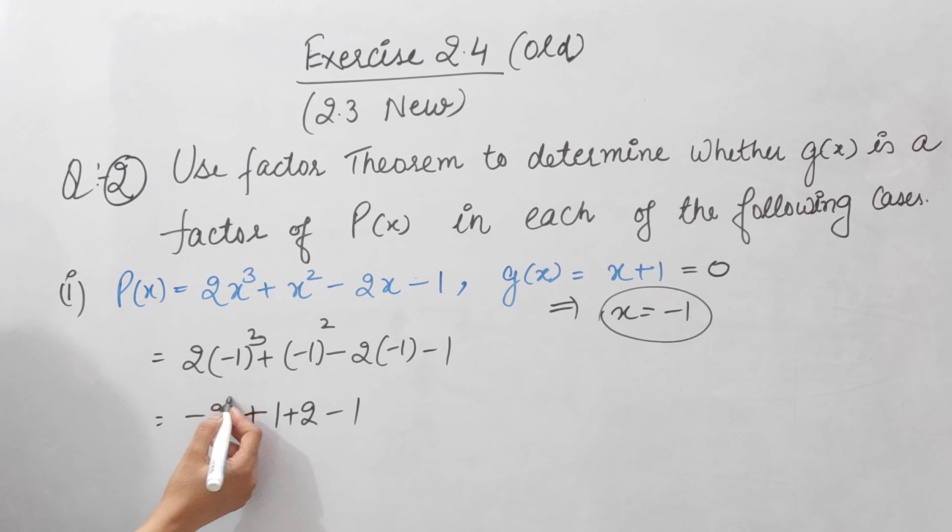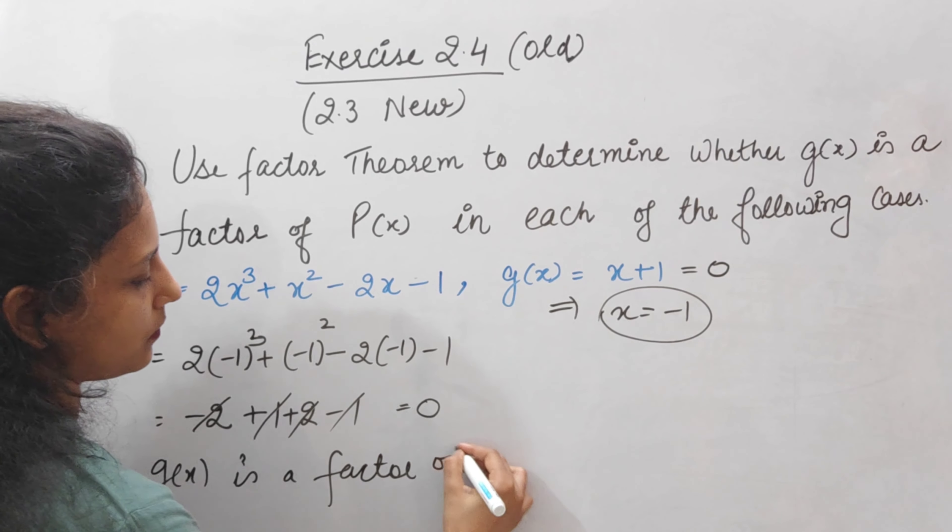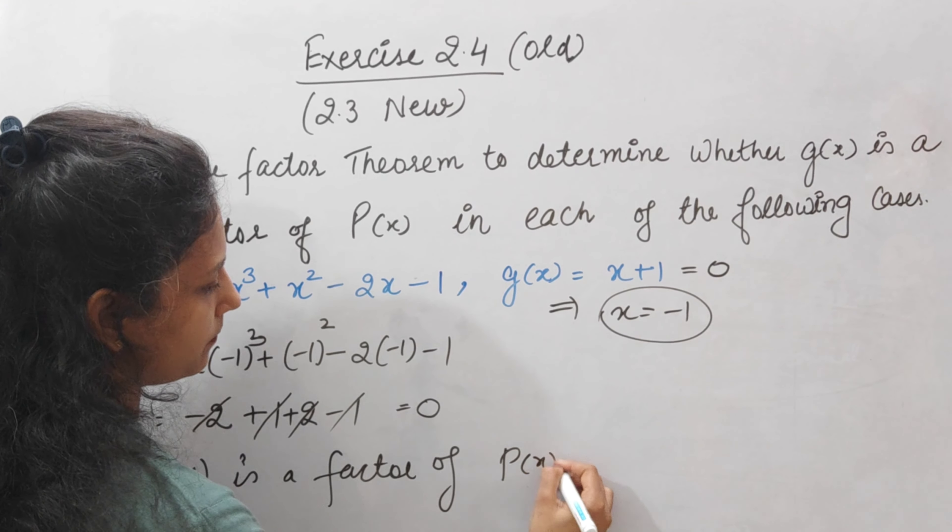So minus 2 and plus 2 cancel out, and plus 1 and minus 1 cancel out. So the answer is 0. It means g(x), which is x plus 1, will be a factor of P(x). And you will write it as: g(x) is a factor of P(x).